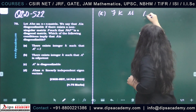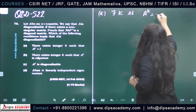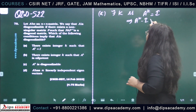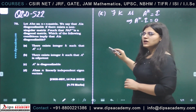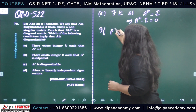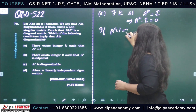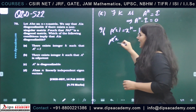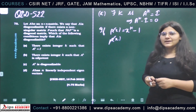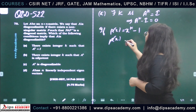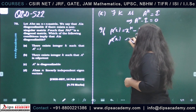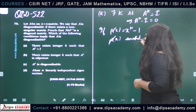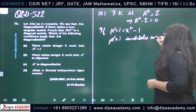In option A, there exists k such that A raised to the power k is the identity matrix, which implies A raised to the power k minus I is the zero matrix. If I consider a polynomial p(x) = x raised to the power k minus one, then p(x) is an annihilating polynomial for the matrix A, because A satisfies this polynomial — p(x) annihilates matrix A.